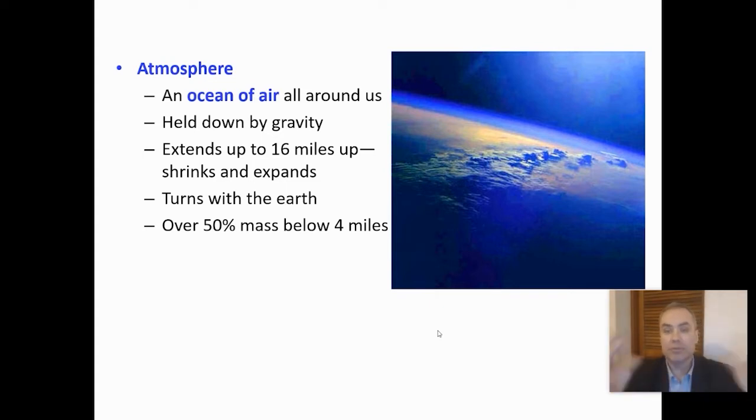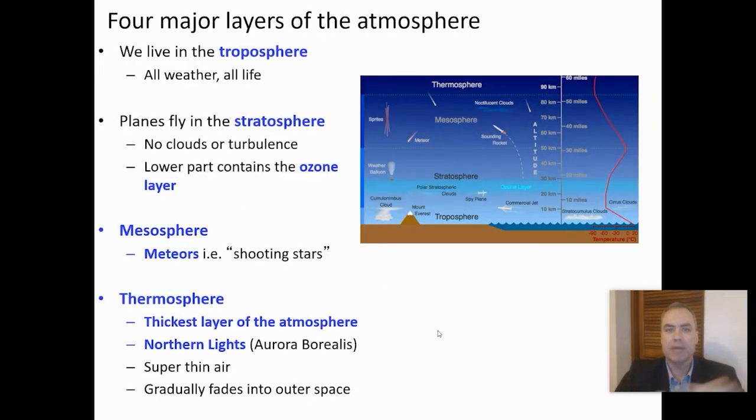The atmosphere turns with the earth. It turns with the earth because the earth drags and has friction on the air. Most of the atmosphere, the vast majority, is at the very bottom. The 44 miles or so at the bottom, we call this the troposphere, the lowest layer of all, just because of gravity.